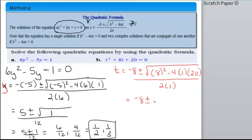Okay, 8 squared is 64. 4 times 1 is 4 times 20 is 80. So, we're going to have 64 minus 80, and that will be a negative 16. And, 2 times 1 is 2. Remember, the square root of a negative is an imaginary number. So, you have negative 8 plus or minus the square root of negative 16 is 4i all over 2.